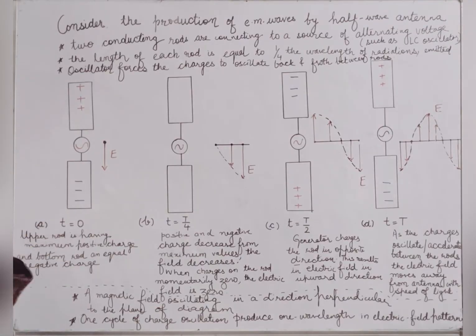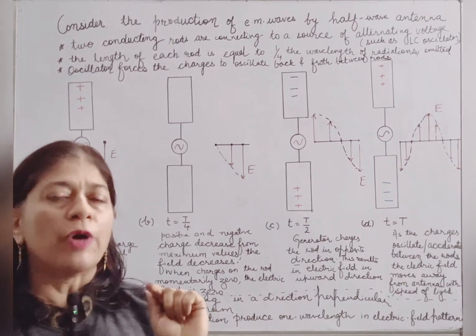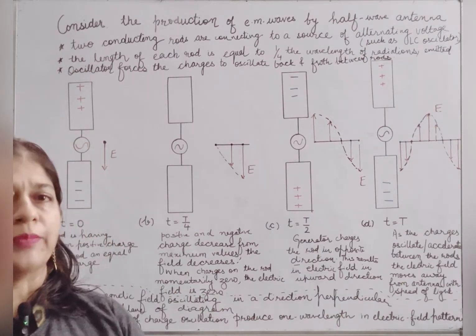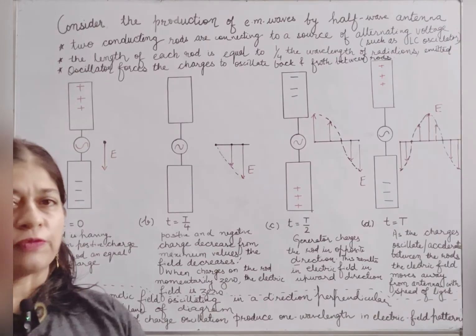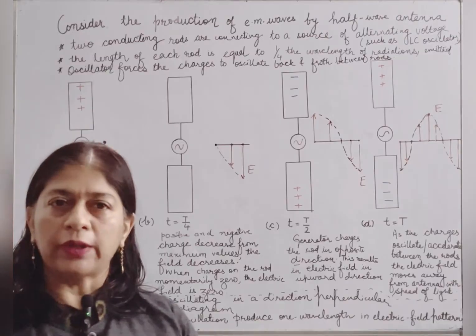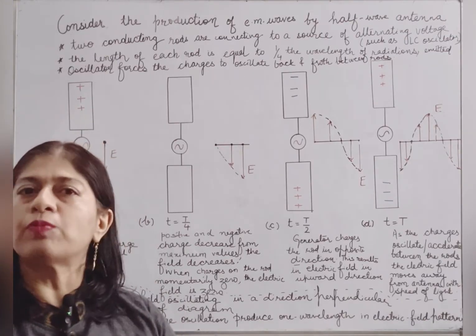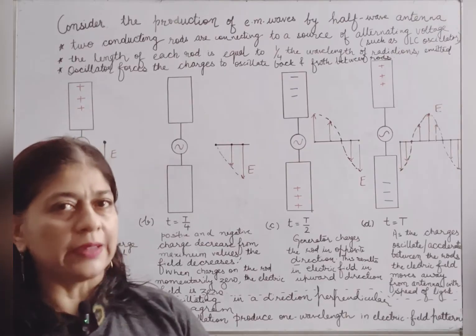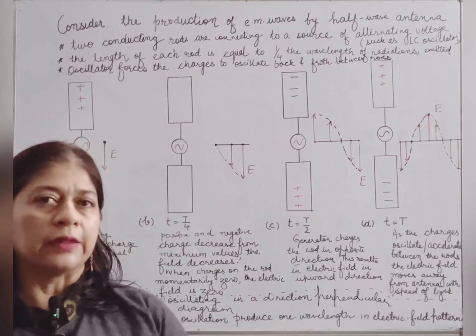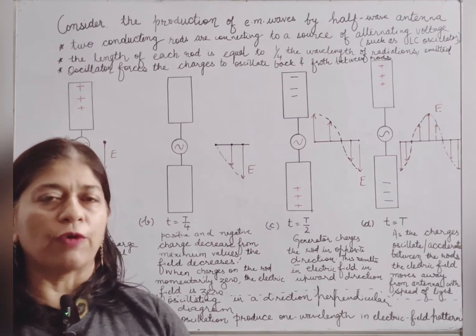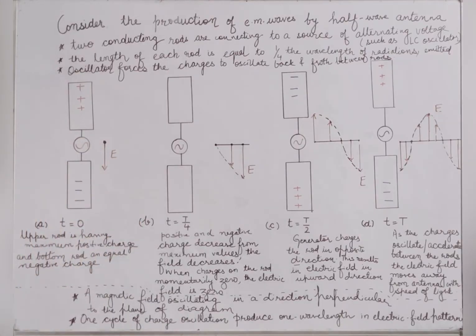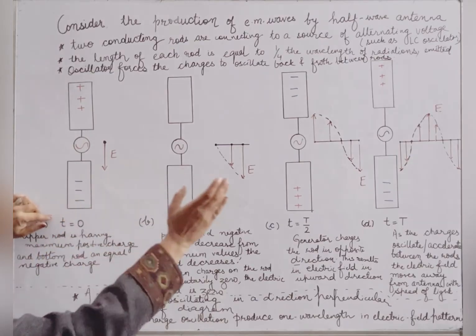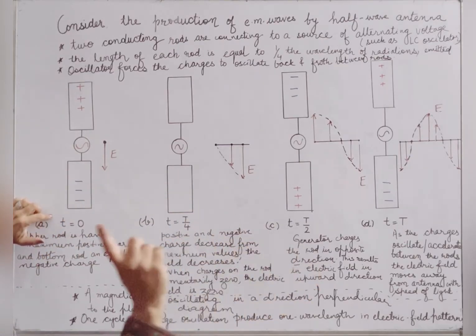The length of these rods is such that they are equal to one-quarter of the wavelength of the waves that are going to be emitted, where F is the frequency of the oscillator. This has already been discussed in detail regarding the size of the antenna. The oscillator forces the charges to oscillate between these two rods. We will consider the time period from t equal to 0 to one full time period T.